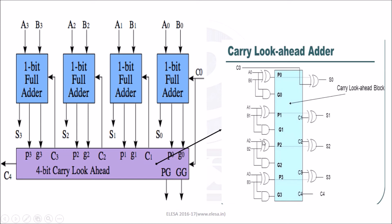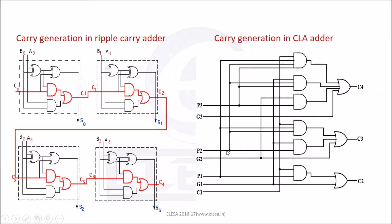Let's understand how exactly the carry lookahead adder reduces propagation delay compared to the ripple carry adder. In ripple carry adder, the carry of the first stage is produced when A0, B0 and C0 are available. Then C2 is available only when C1 is available, and to make C1 available, A0, B0 and C0 must be available. Then to calculate C3, C2 must be available, and for C4, all the previous stage carries must be available. This is what causes the large propagation delay in the ripple carry adder.